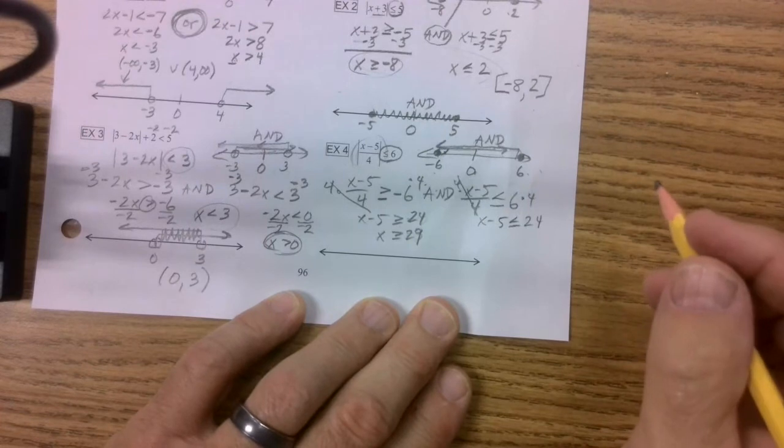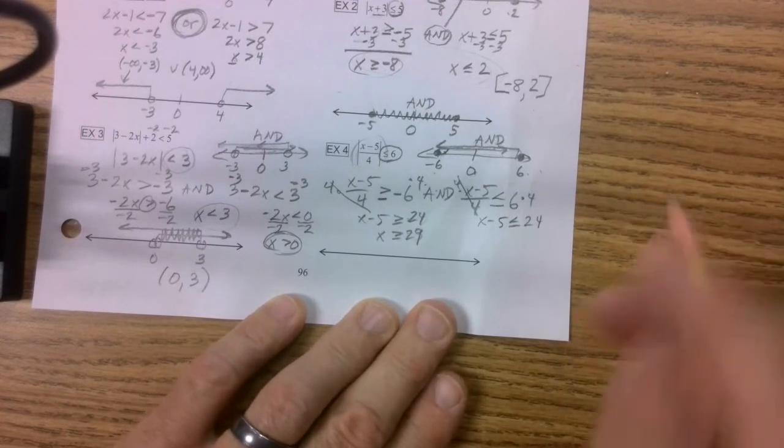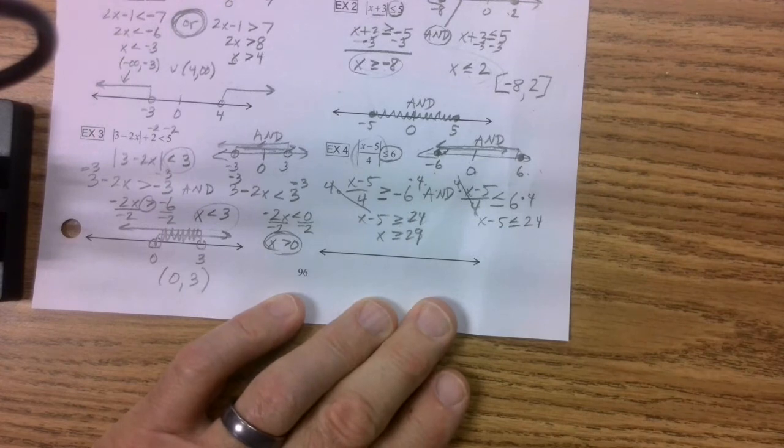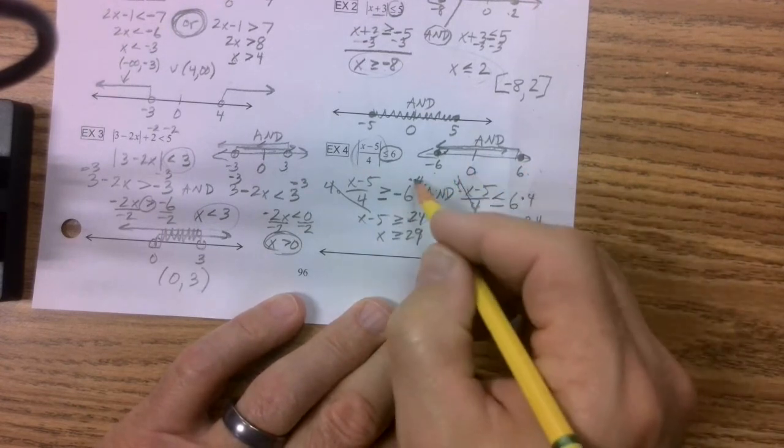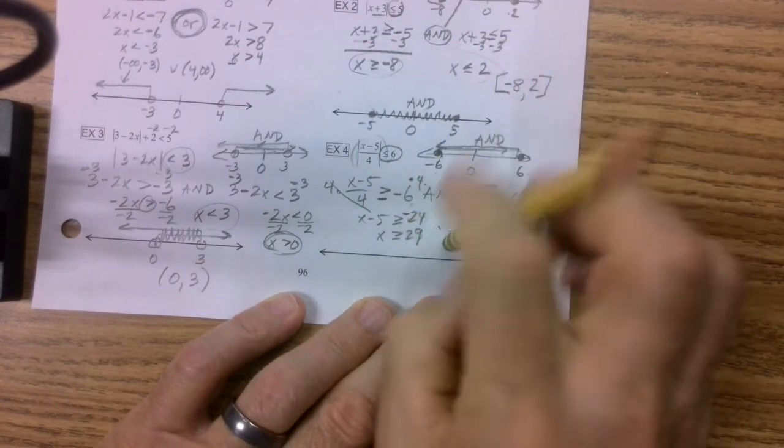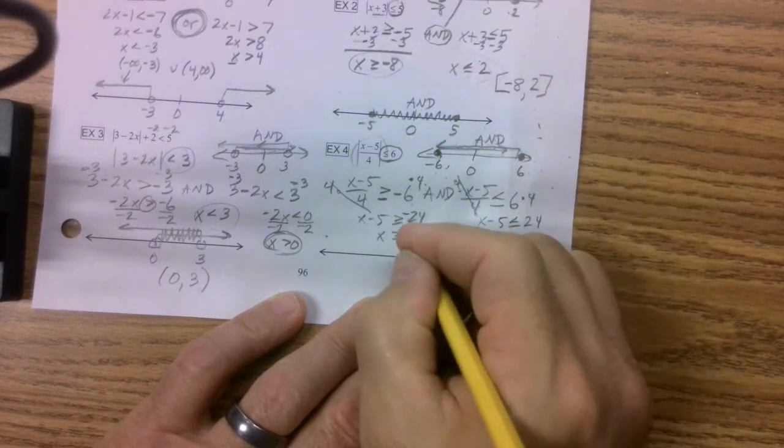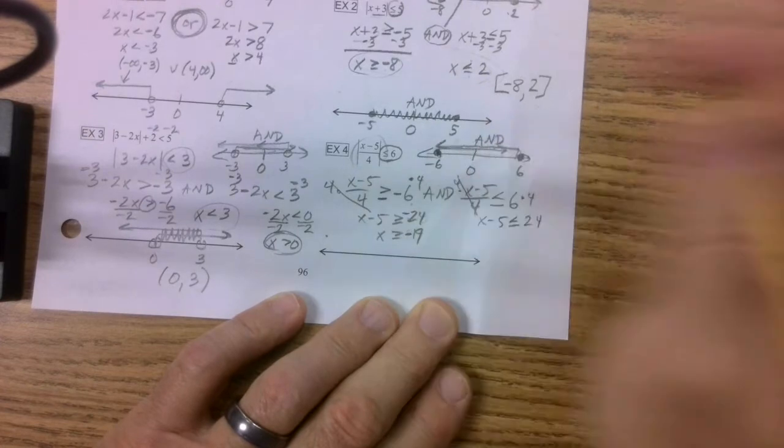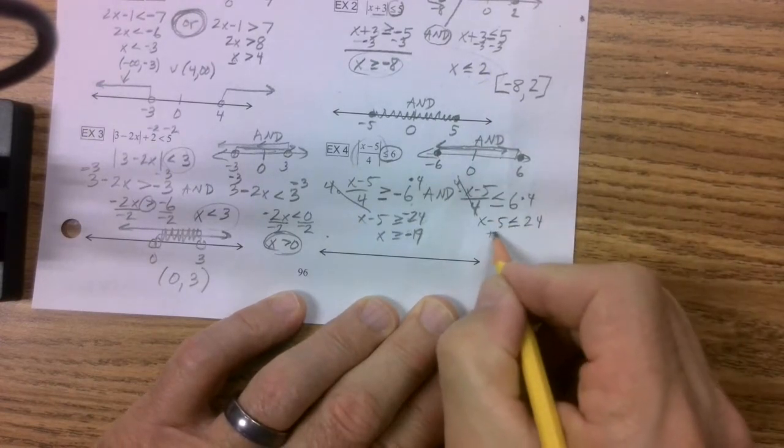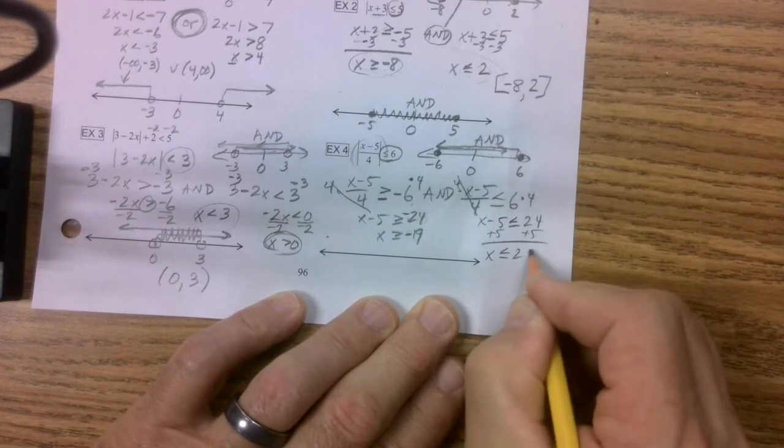And I get x is greater than or equal to 29. Okay, it's a big difference. And hold it, again I'm going to use the 6:30 in the morning excuse. This was not a negative, it's my symbol for times. So this should have been negative 24. So then when I add 5 to both sides, I get negative 19. There we go, I'm back on it. Add 5, add 5, and I get x is less than or equal to 29.